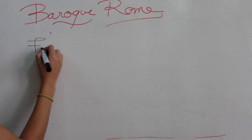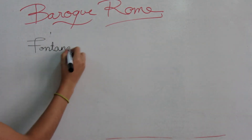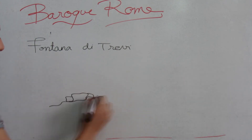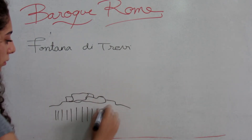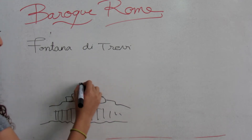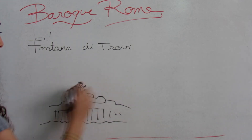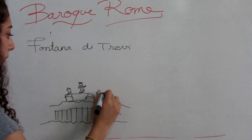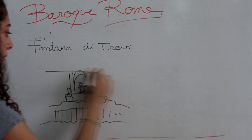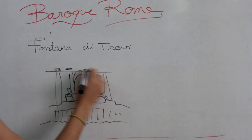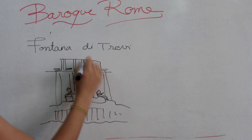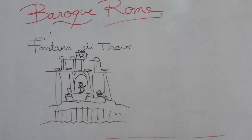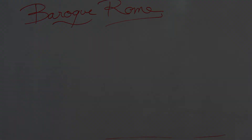The Fontana di Trevi is a fountain in the Trevi district, designed by Italian architect Nicola Salvi and completed by Pietro Bracci. Standing 26.3 meters high and 49.15 meters wide, it is the largest Baroque fountain in the city and one of the most famous fountains in the world. This fountain marks the end of the modern Aqua Virgo, one of the aqueducts that supplied water to ancient Rome in 19 BC.